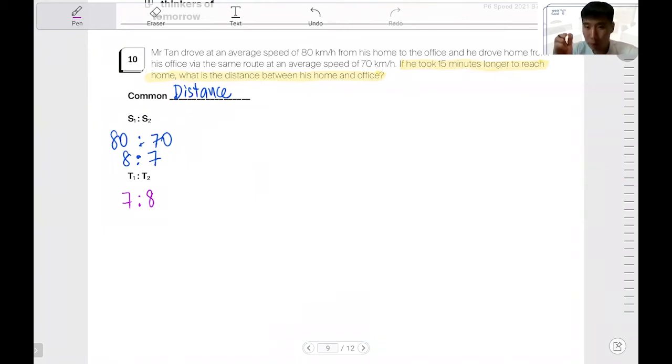If it took 15 minutes longer to reach home, we are talking about time over here, which tells you that the difference in time taken is actually 15 minutes, right? Which means that, actually, one unit here is 15 minutes. Okay, Archmaule, can you understand it, Chloe? One unit is 15 minutes, because it's 7 is to 8. Okay, now, you want to find the distance.